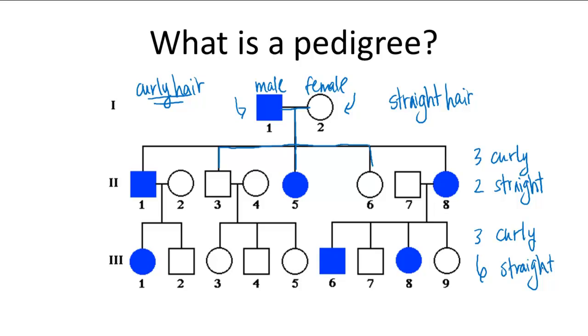So from this pedigree, we can also tell that curly hair is a dominant trait. And why do I say that? It's because if you look at all the couples that have a curly haired individual, they have children that have curly hair.